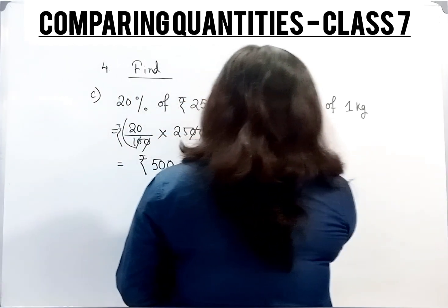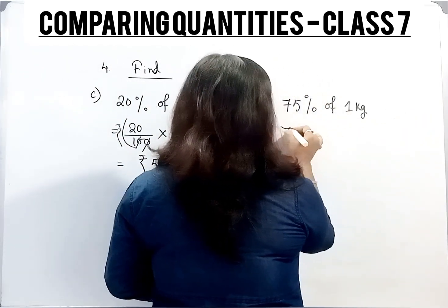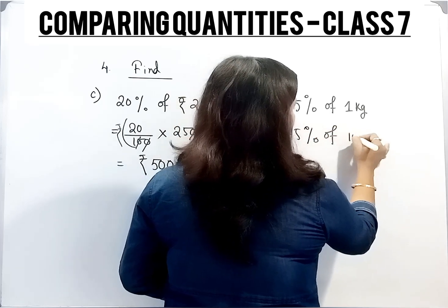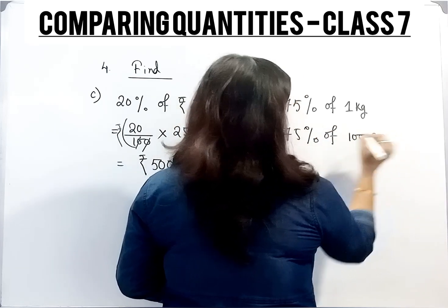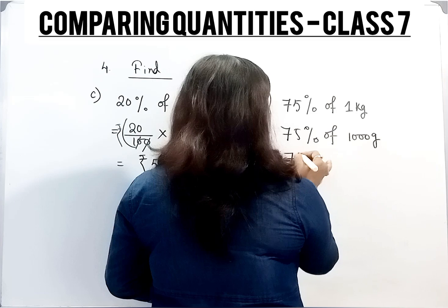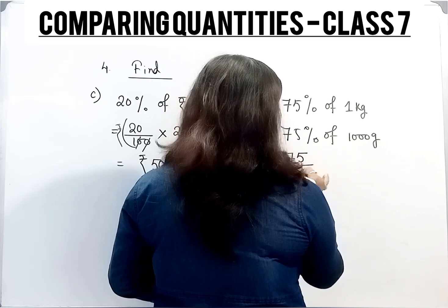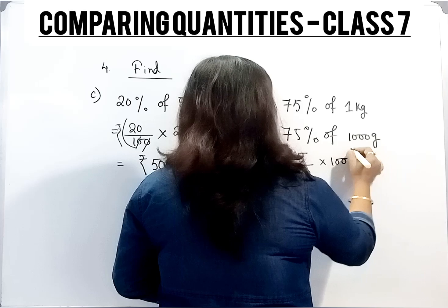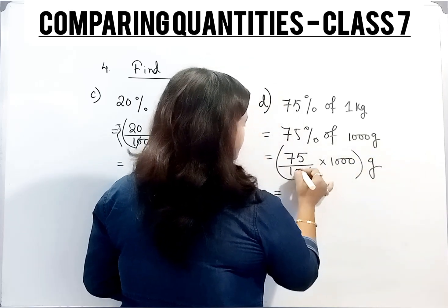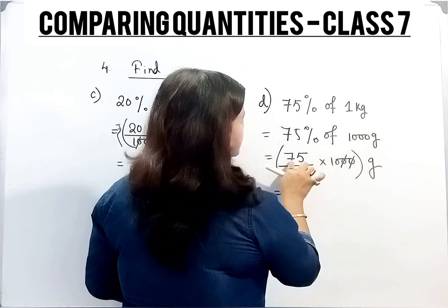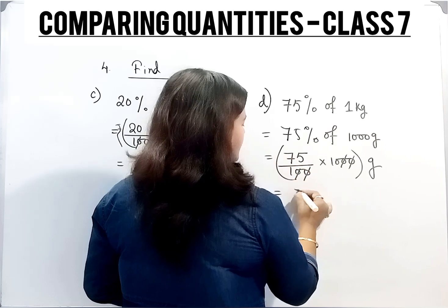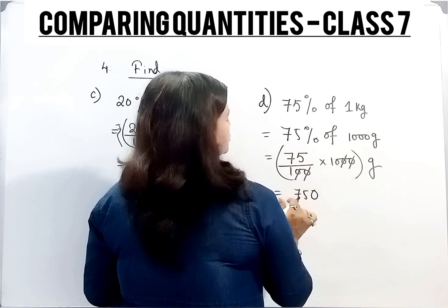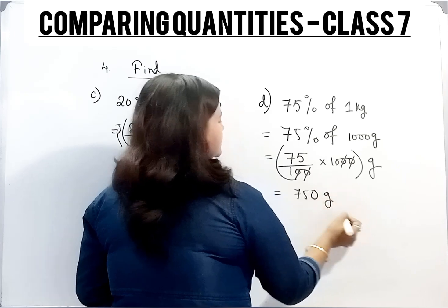Now next one. 75 percent of 1 kg, that means 75 percent of 1000 grams. 75 percent, 75 divided by 100, into 1000, and unit will be grams. The zeros cancel. So 75 multiplied by 1 gives 75, and adding this zero. So 750 grams is the answer.